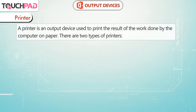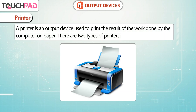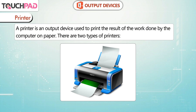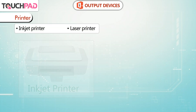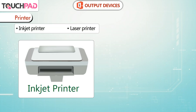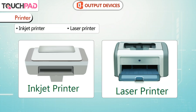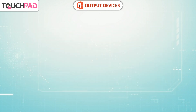Printer. A printer is an output device used to print the result of the work done by the computer on paper. There are two types of printers: Inkjet Printer and Laser Printer.